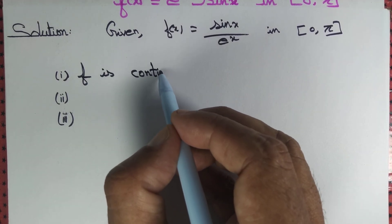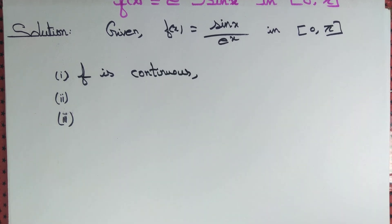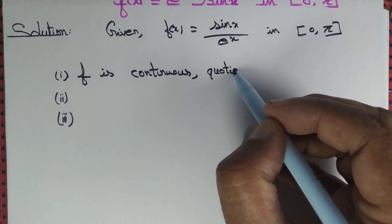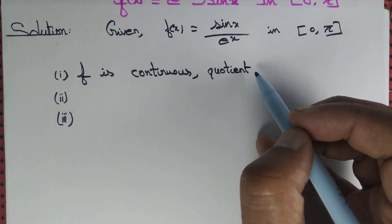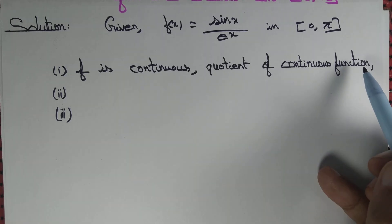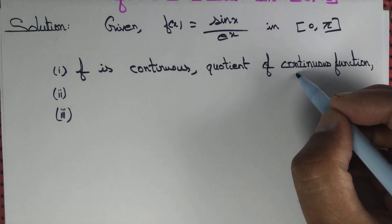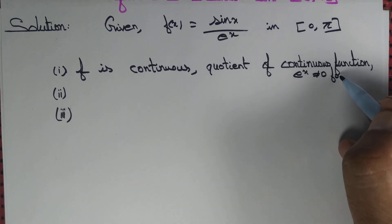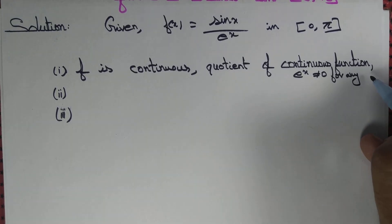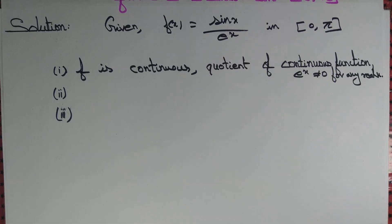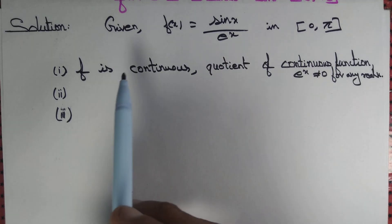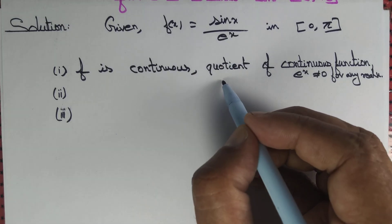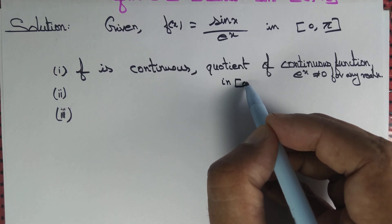We know f is continuous because it is a quotient of continuous functions, and e^x is not equal to 0 for any real x. So the first condition — f is continuous — is accepted. It is continuous throughout ℝ, and therefore it is continuous on [0, π] as well.